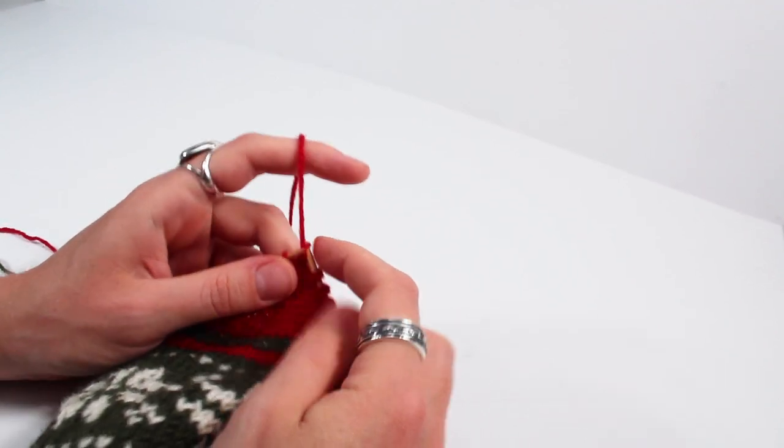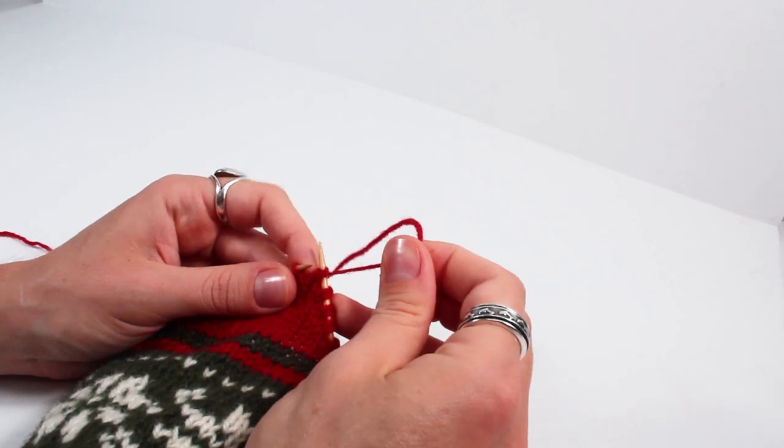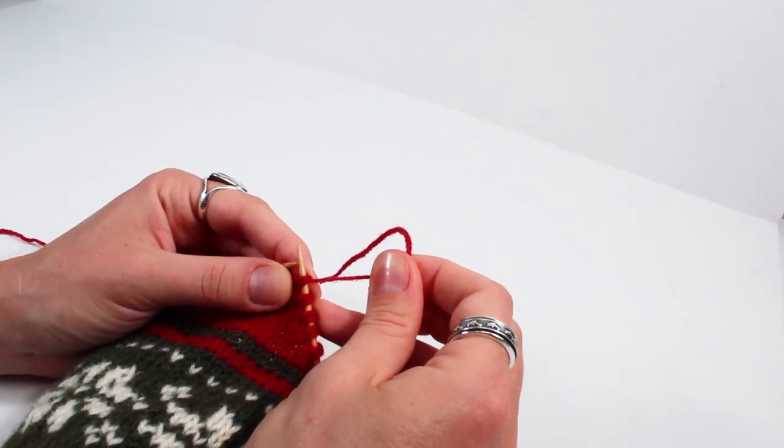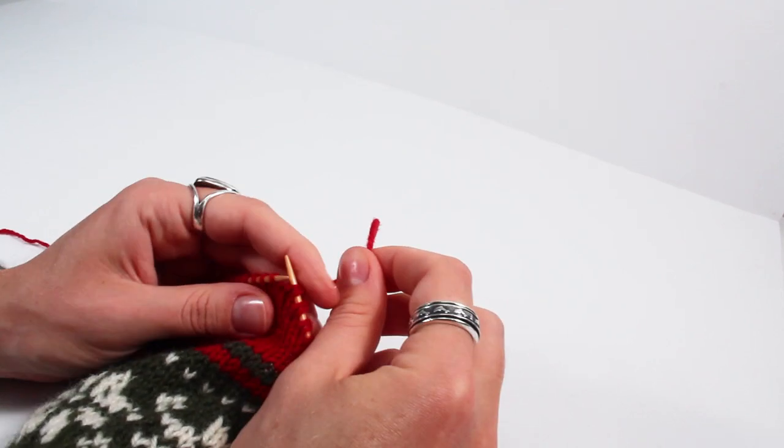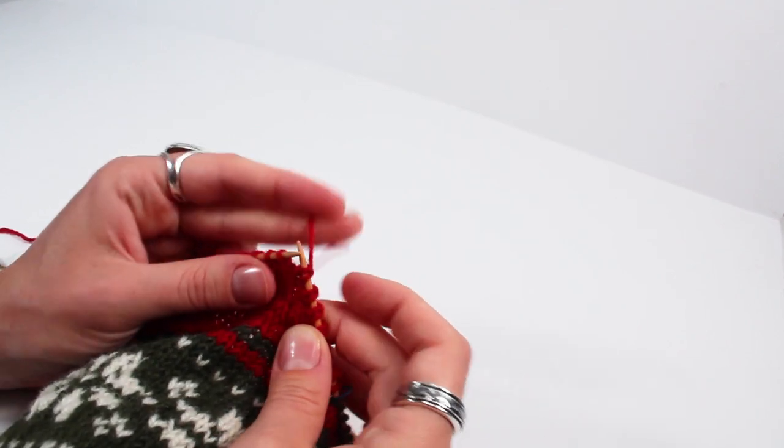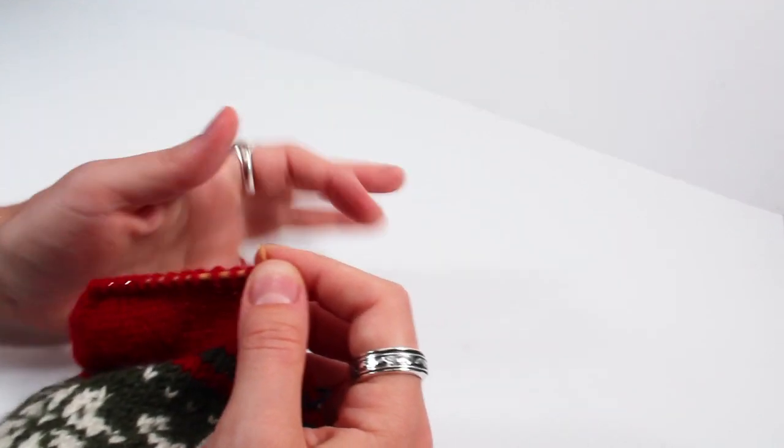And slip the stitch purlwise again. Pull up on the working yarn creating that double stitch. And this time just keep the yarn in back so you can begin knitting across this side of the heel.